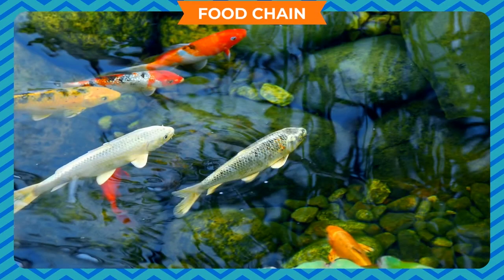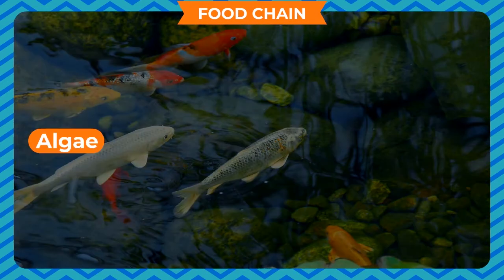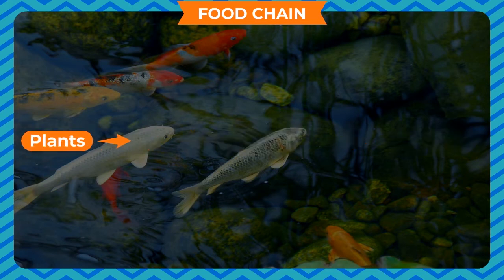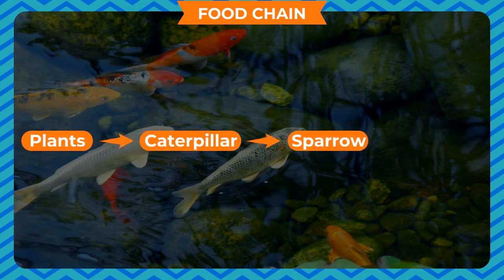A typical food chain in a pond is algae, small fish, hawk. Or in another example: plants, caterpillar, sparrow, hawk.